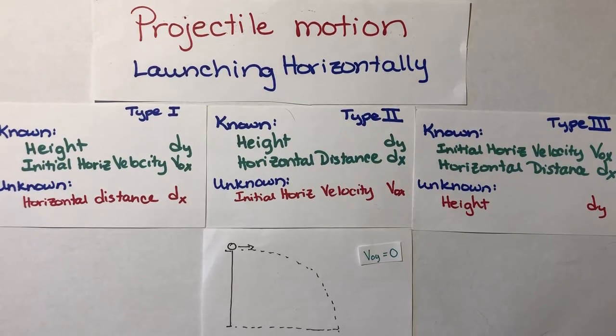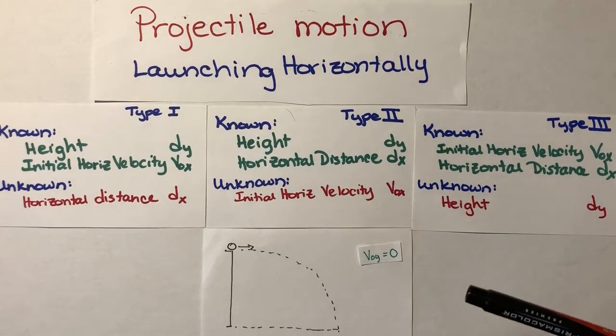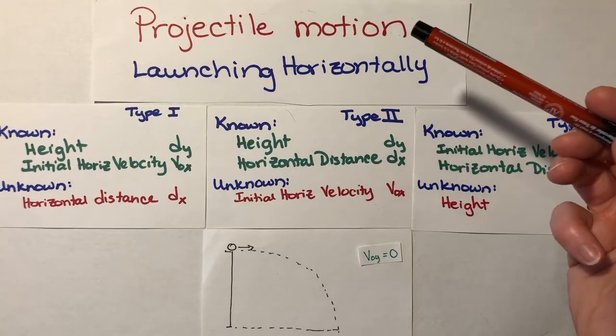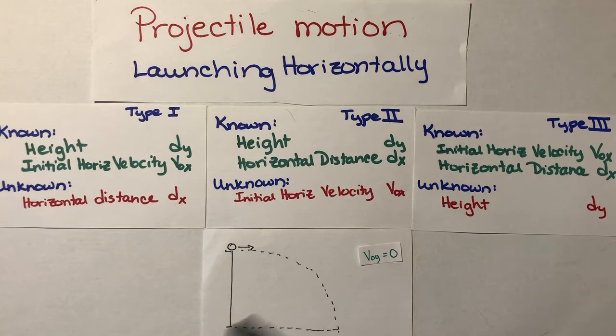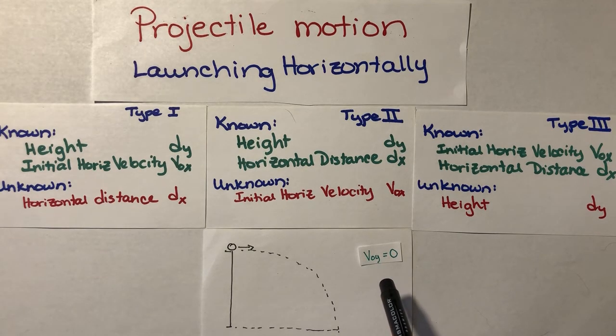Hi physics class! This is Mrs. Cracky with the second video in our group of three videos about projectile motion where we're launching our projectile horizontally. So all three of these we're going to be dealing with a cliff for simplicity. The ball is launched horizontally, so please remember that v0y or initial velocity in the y direction for these type of problems is zero.